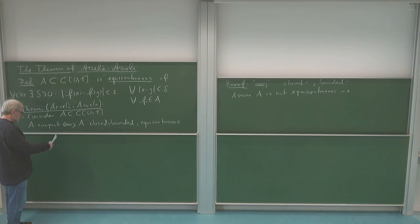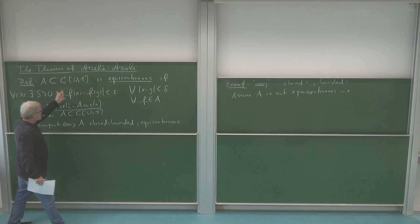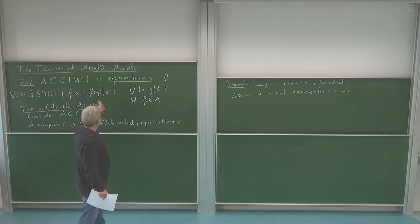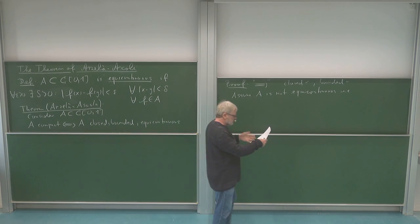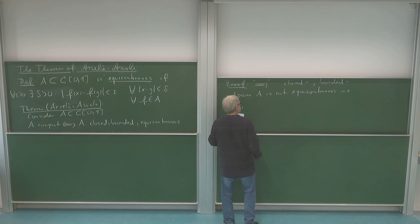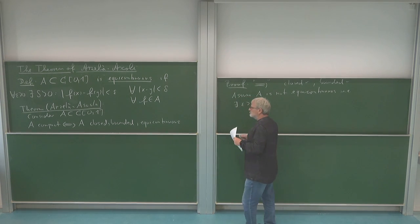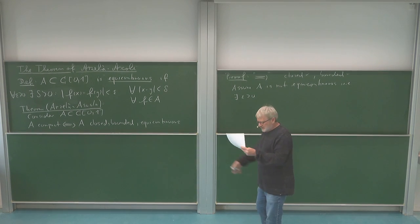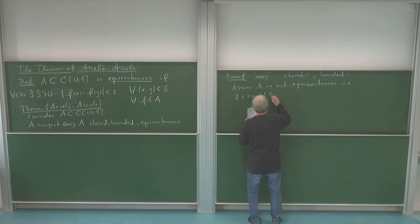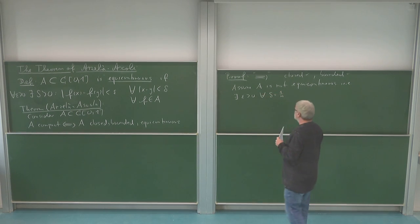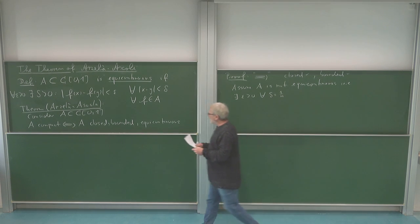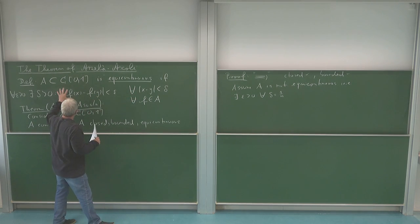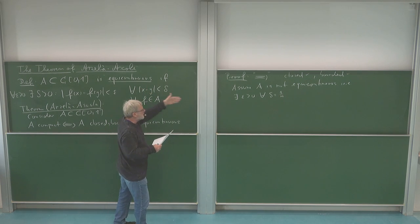Not having the equicontinuity property means there exists an epsilon such that for all delta I have a violation. For the deltas I choose 1/n, which allows me to get a sequence. Being not equicontinuous means: for all delta of the form 1/n, there exist points and a function such that the equicontinuity condition fails. I get elements indexed by n depending on this delta.